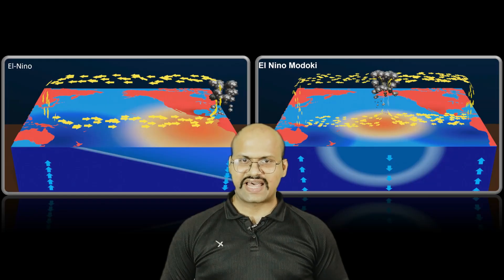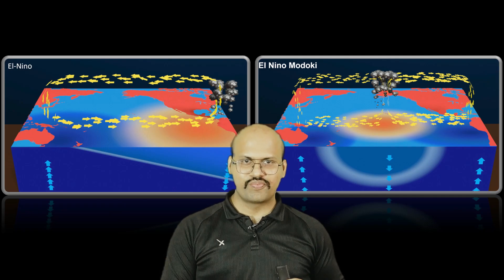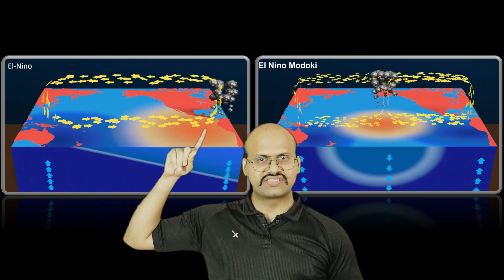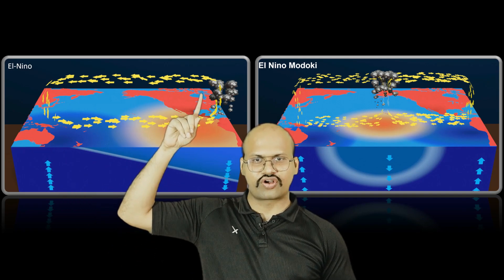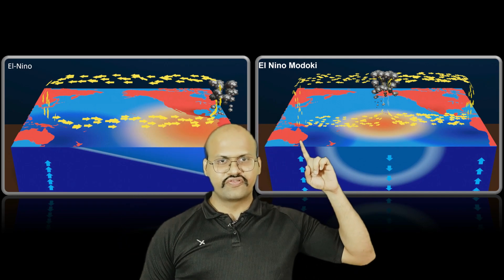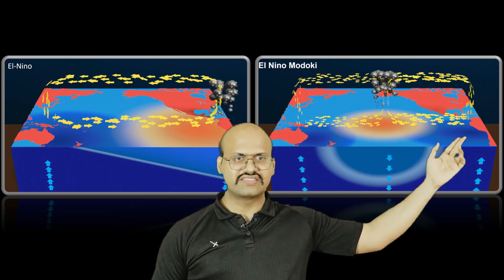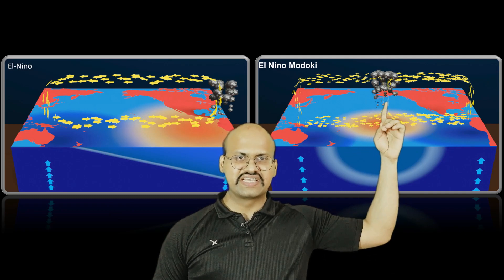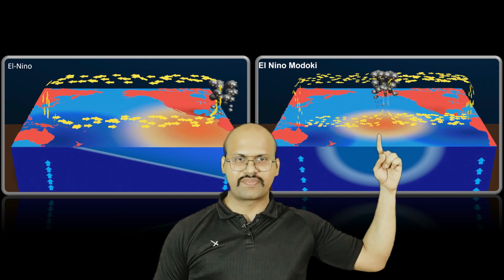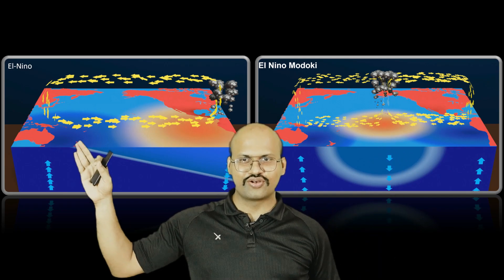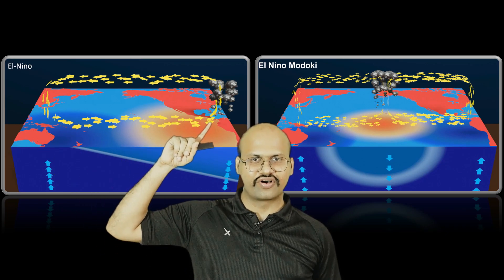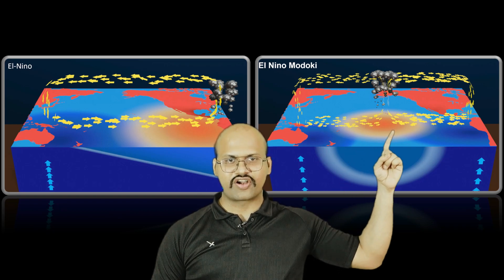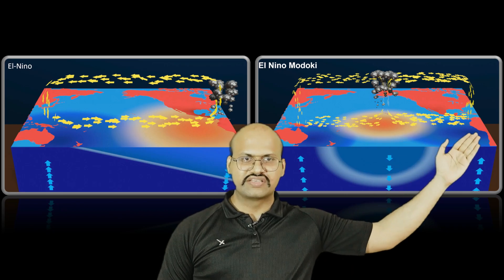We can directly compare normal El Niño and El Niño Modoki. In normal El Niño, the wind current starts from Australia and goes to South America, rising over South America and giving heavy rainfall there. In El Niño Modoki, winds from both Australia and South America move toward the central Pacific and rise there. So in normal El Niño there is drought in Australia but heavy rainfall in South America, while in El Niño Modoki rainfall is concentrated in the central Pacific and there is no rain in Australia or South America.